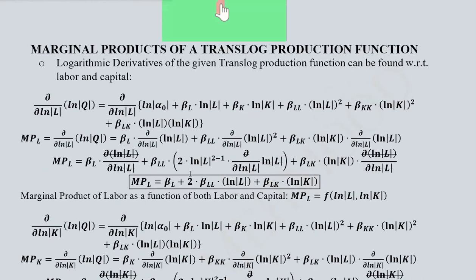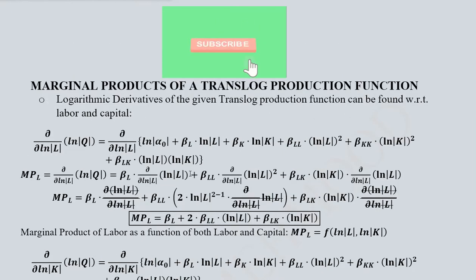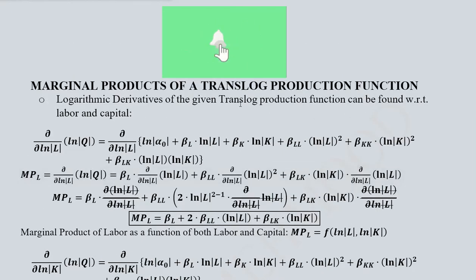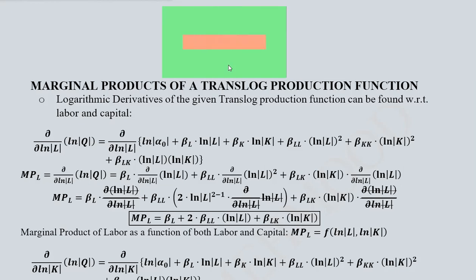This is how we can understand the marginal product of the translog production function, and using these marginal products we can also find the optimal factor combination for the translog production function.